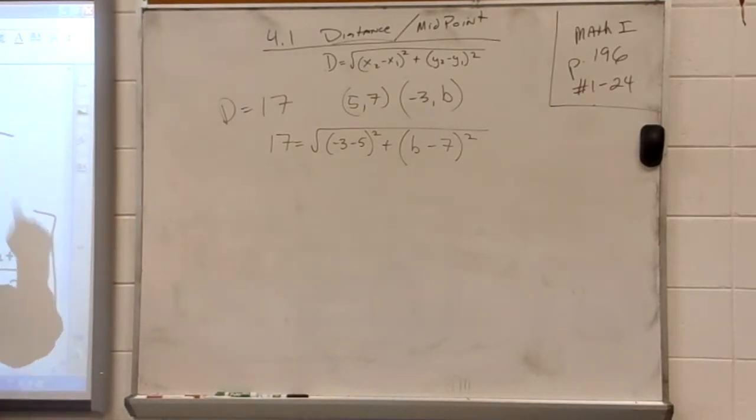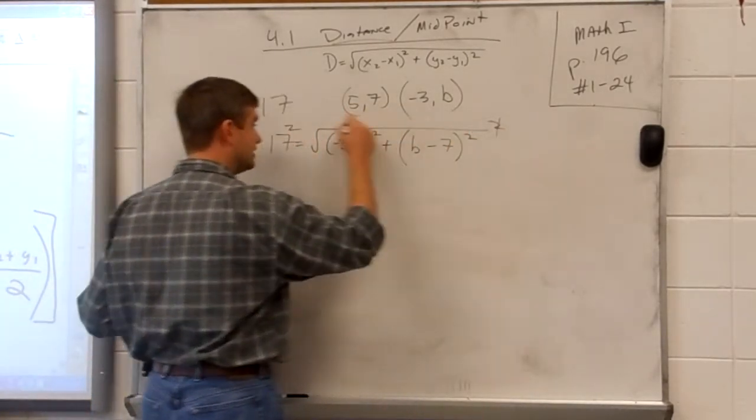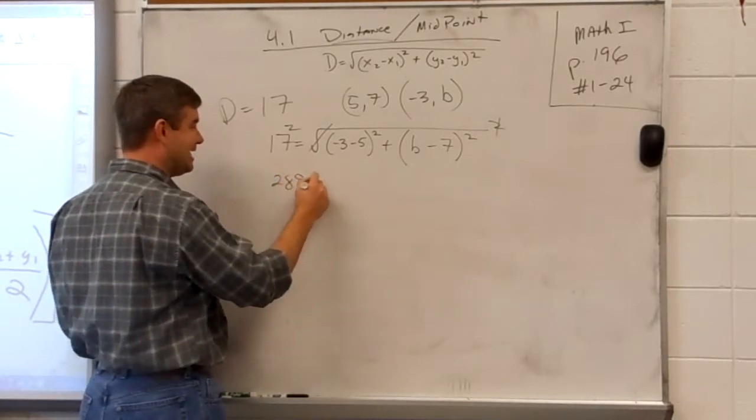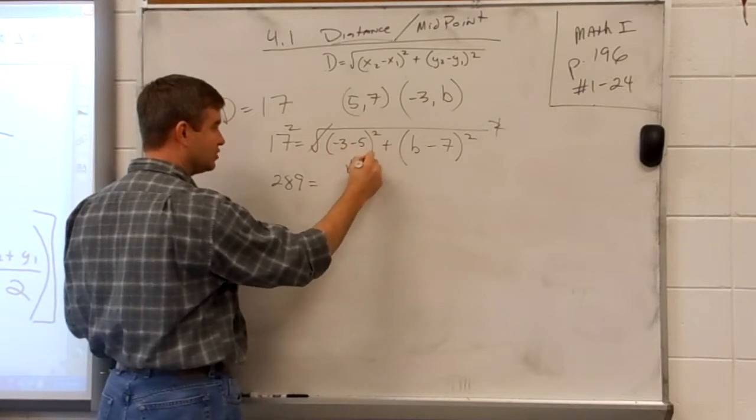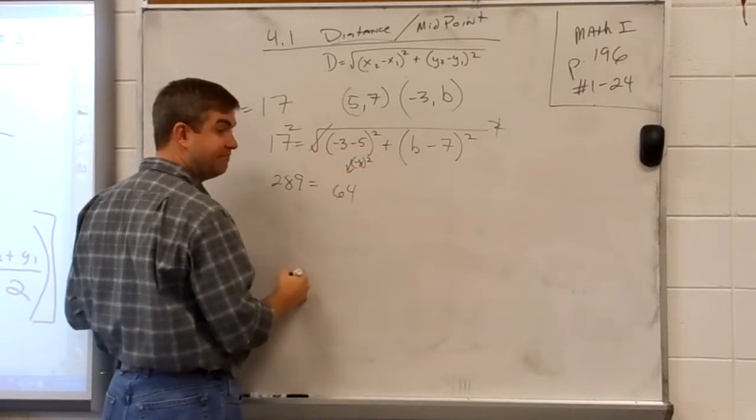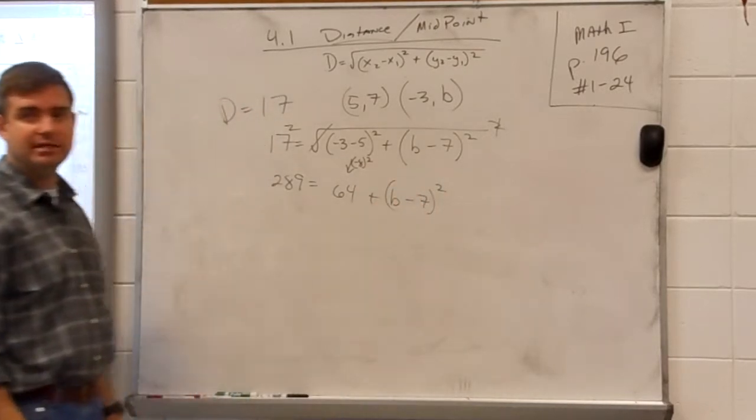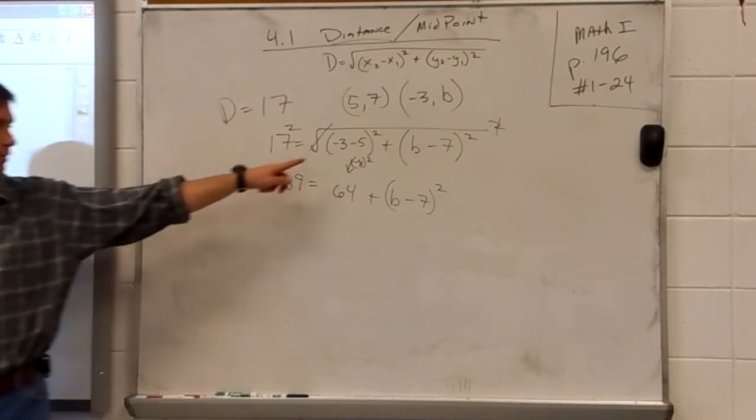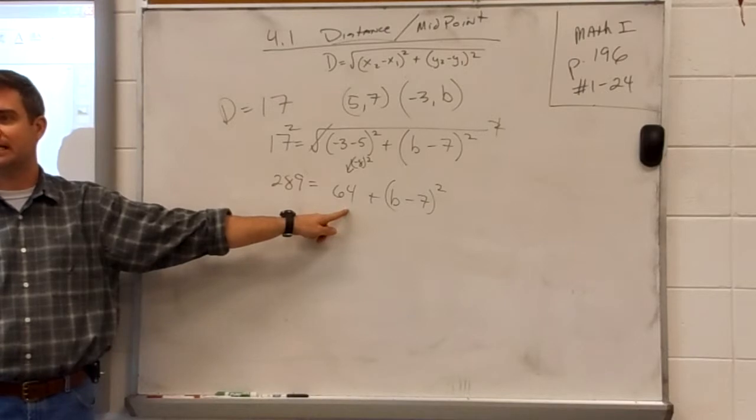Step number two is to do what to both sides? Square both sides. You square the 17, you square all of this, and that square and the square root cancel out. So I get 289 equals, this just works out to be negative 8 squared if I'm not mistaken, and 64 plus b minus 7 squared. Is that right? Did I do that right? Okay, so you square both sides, and you figured out what this stuff squared would be. That's not too hard. That's two steps at one time.